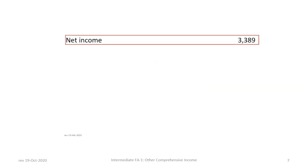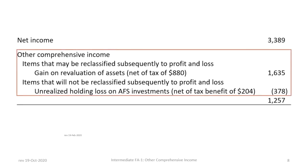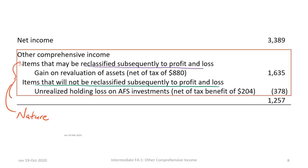Regardless of whether the single statement or two statement approach is adopted, the OCI section comes after Net Income. If no discontinued operations section exists, then Net Income would equal income from continuing operations. The OCI section is broken out by two subclassifications: items that may be reclassified subsequently to profit and loss, and items that will not be reclassified subsequently to profit and loss. This is referred to as presenting the OCI section by nature.